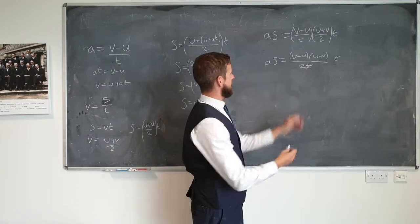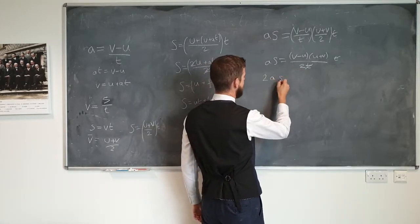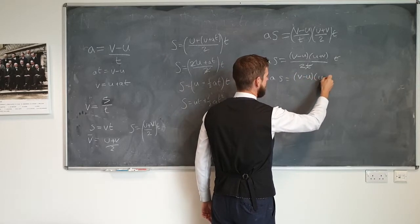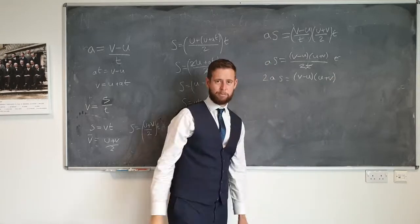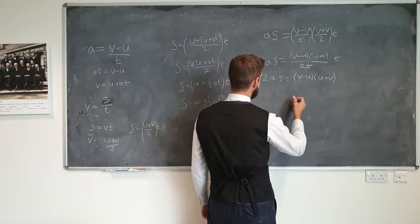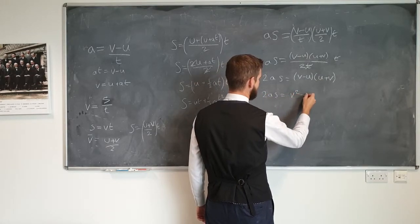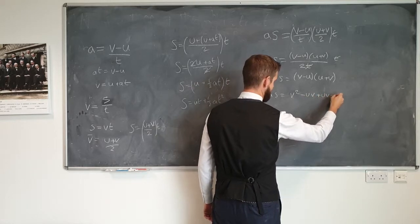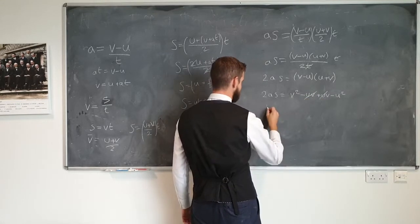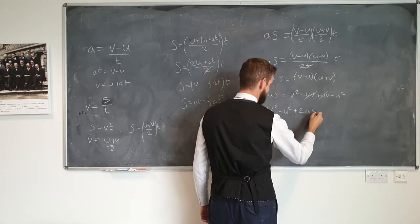So now I have this expression. I'm going to multiply both sides by two, so that the two appears over here. 2AS equals V minus U, U plus V. I can multiply out these brackets as well. I'm going to multiply out the Vs, and I end up with 2AS equals V squared minus UV plus UV minus U squared. So therefore this and this cancel out. The rearrangement gives V squared equals U squared plus 2AS.